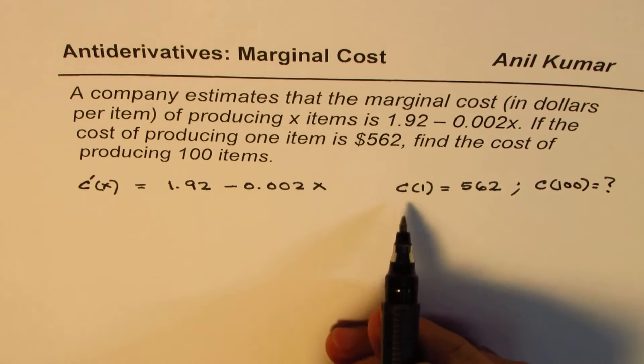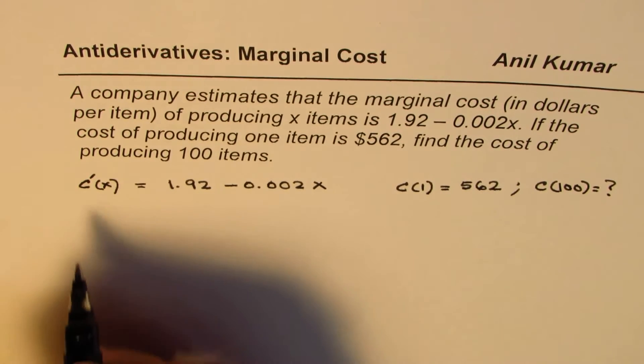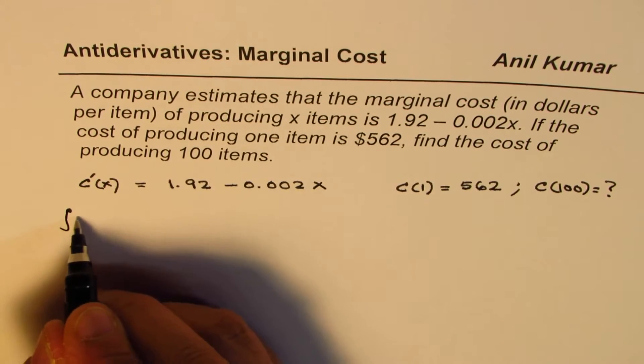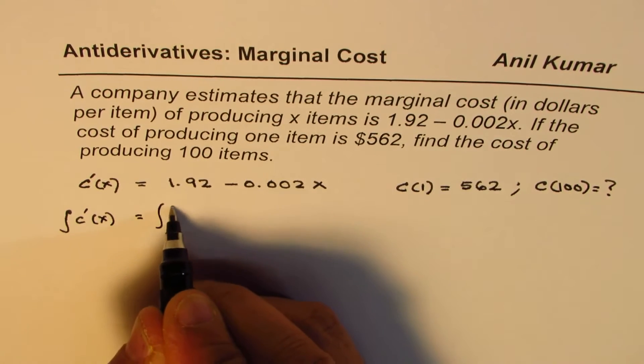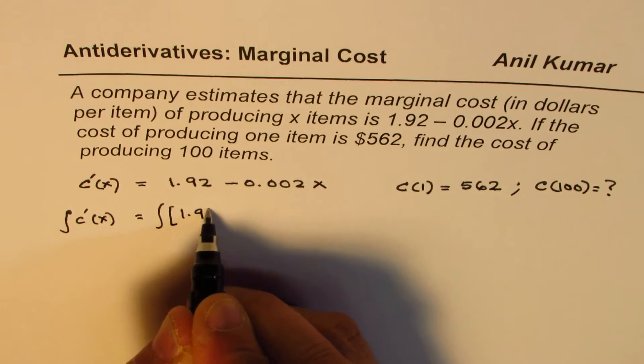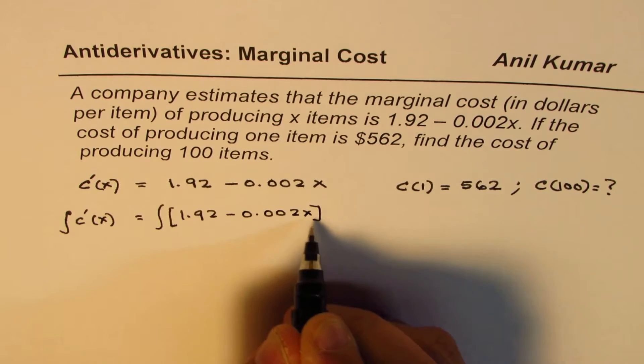Now, to find the cost function from marginal cost, we can integrate both sides. So we get the integration of C'(x) dx equals the integration of 1.92 minus 0.002x dx.